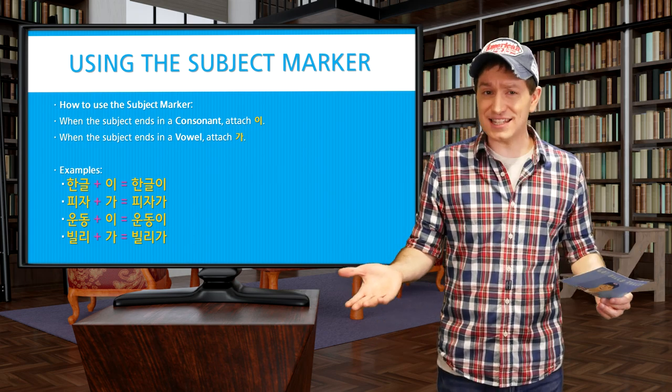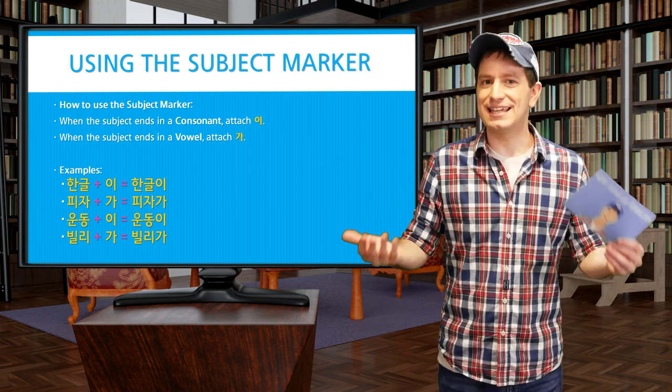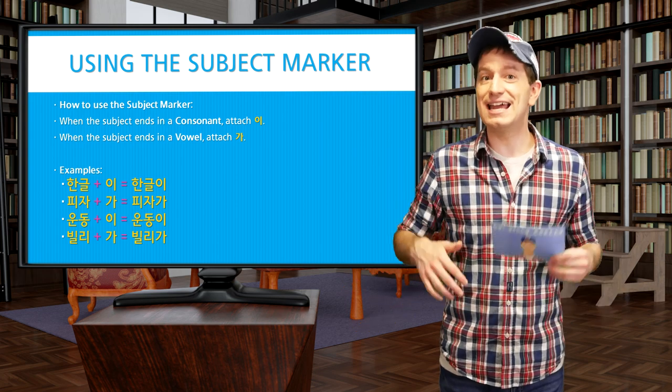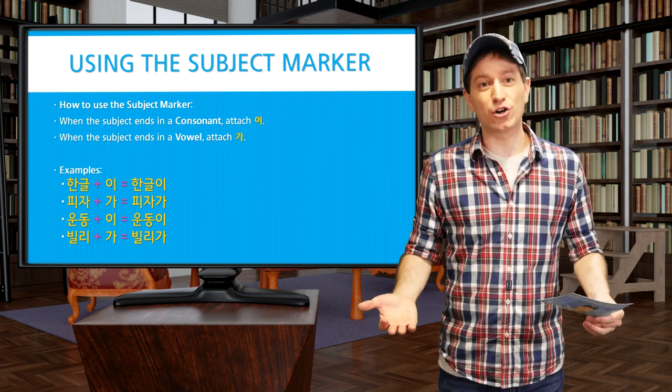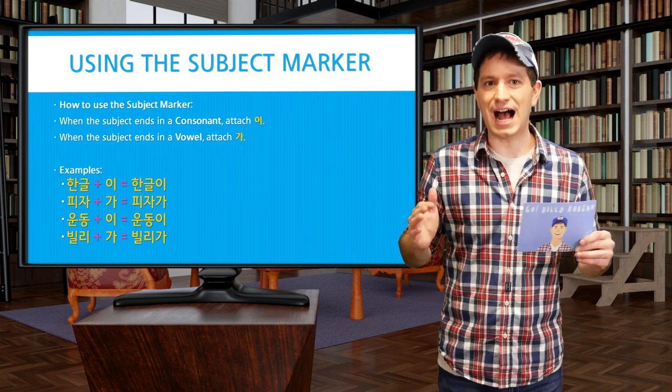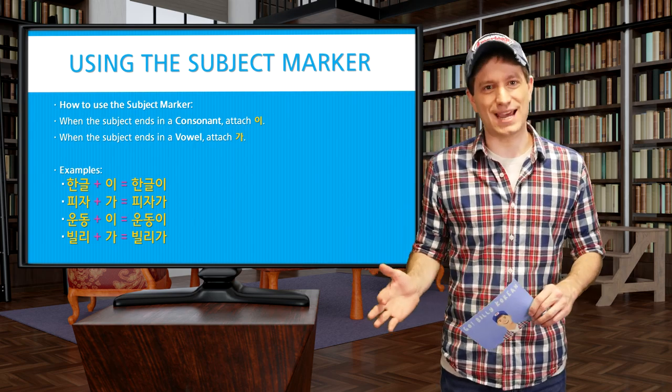After a consonant, the subject marker will be 이. And after a vowel, the subject marker will be 가. So here are some quick examples.